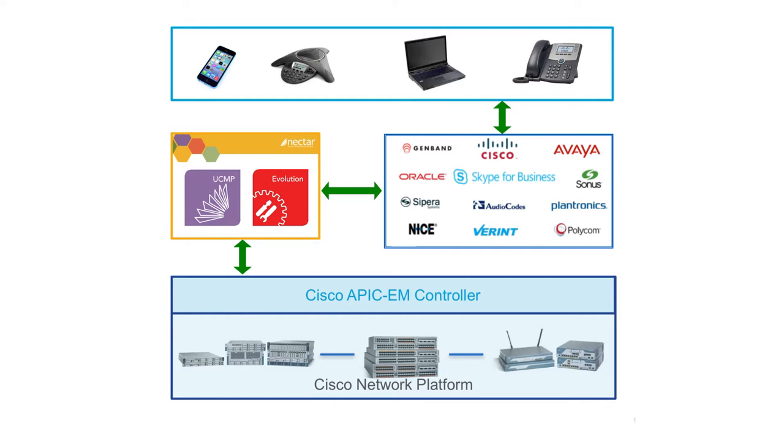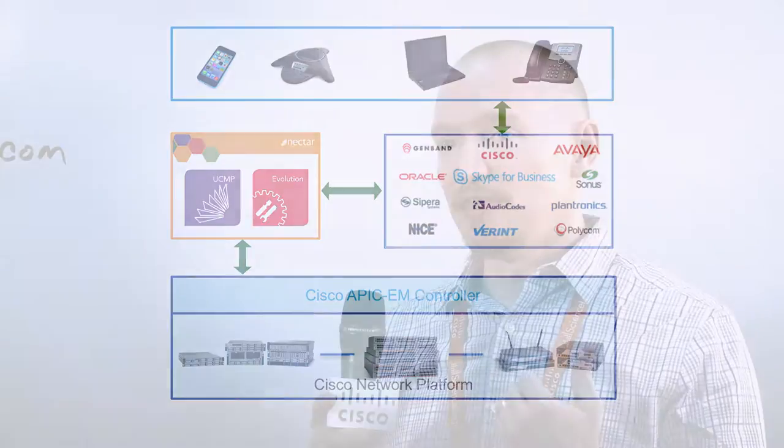APIC has a northbound API that's RESTful and very simple to use. You log in, get a token to authenticate, and then you can pull almost any kind of configuration information you want. So we can see what's already configured for quality of service, make sure all the features we need are turned on, and then start providing information about the users we know about and want to add flow information for.